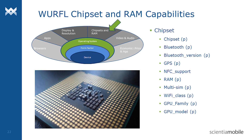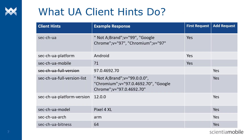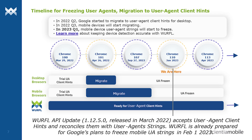So what is new? Google has introduced several new client hints called user agent client hints. By February of 2023, Google will start freezing both desktop and mobile Chrome browser user agent strings. In place of the user agent string, Google wants website owners to start requesting user agent client hints. As of today, Warfel is ready to accept these user agent client hints. In fact, for more than a year, Warfel has smoothly accepted user agent client hints and maintained its industry-leading accuracy.